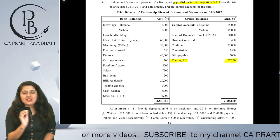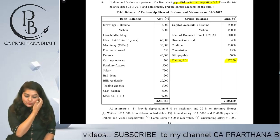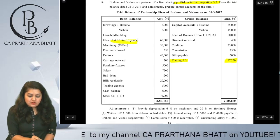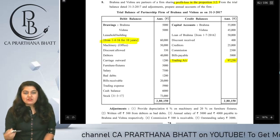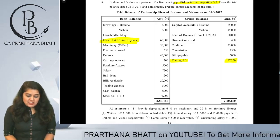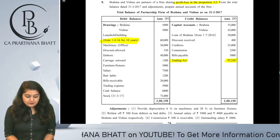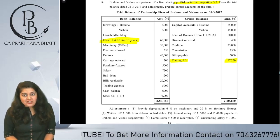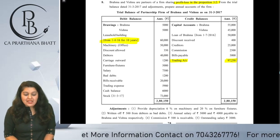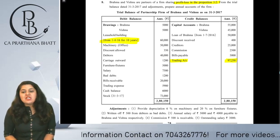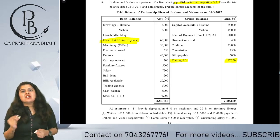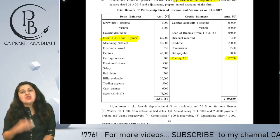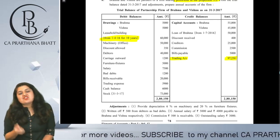Trading account has already been prepared and shows a profit of 97,250. On the debit side we have drawings of Brahma and Vishnu, leasehold building at 1,4,16 for 10 years - keep that in mind for adjustments - machinery, discount allowed, debtors, carriage outward, furniture and fixtures, salary, bad debts, bills receivables, trading expenses, cash balance, and stock as on 31st March 2017. Trial balance has one effect; adjustments may have two or more effects.